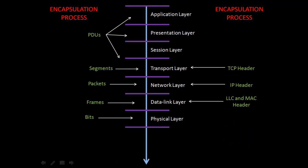Here's another perspective on the encapsulation process. At the top three layers — layer 7, 6, and 5: application, presentation, and session — we have protocol data units, or PDUs. At layer 4, the transport layer, we have segments and a TCP header. At layer 3, where routing takes place, we have packets and IP headers. At layer 2, the data link layer, we have frames, logical link control, and MAC addresses. Finally, at the physical layer, we have bits.